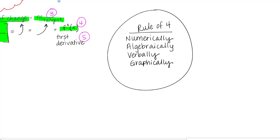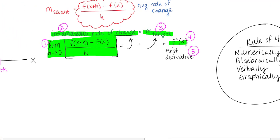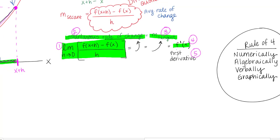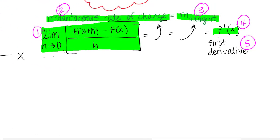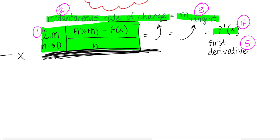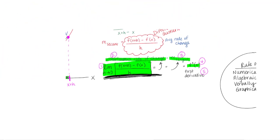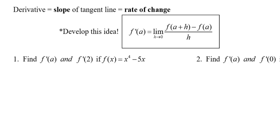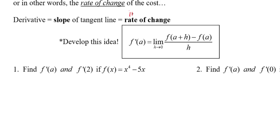If you can understand the rule of four for every problem, you have a good chance of understanding what you're doing. So let's look at the algebra behind all of this. We'll be working with the limit definition of a derivative: the derivative equals the slope of the tangent line, equals instantaneous rate of change, and in notation is f prime of x or f prime of a. You can use an a or an x — I like to keep x while working through it, then substitute a at the end.